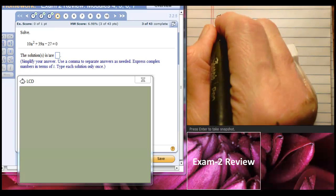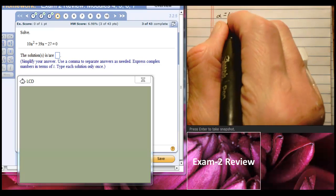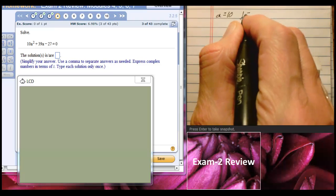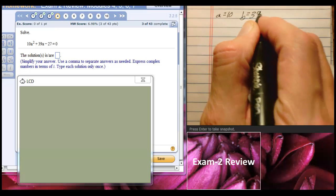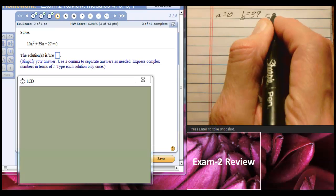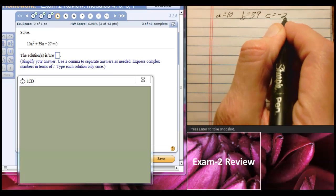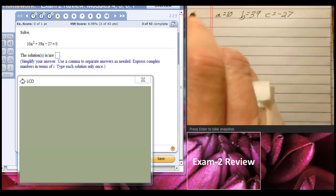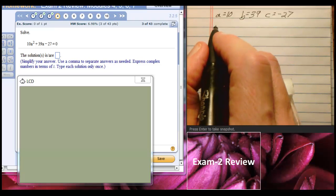Our A number is going to be 10, our B number is going to be 39, and our C number is negative 27, and I'm going to use the quadratic formula.